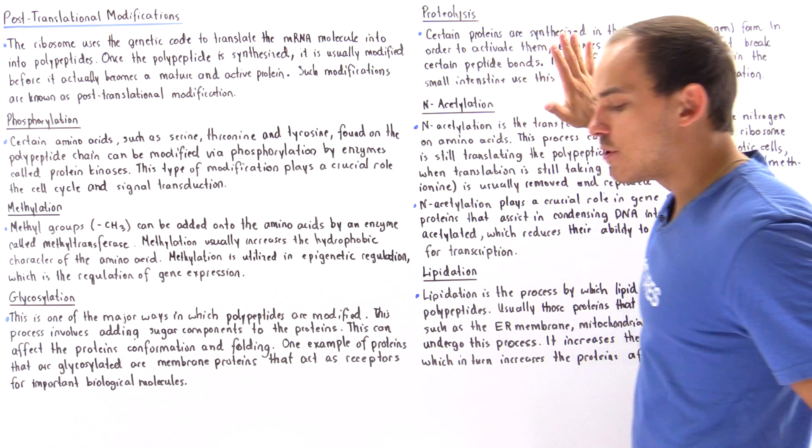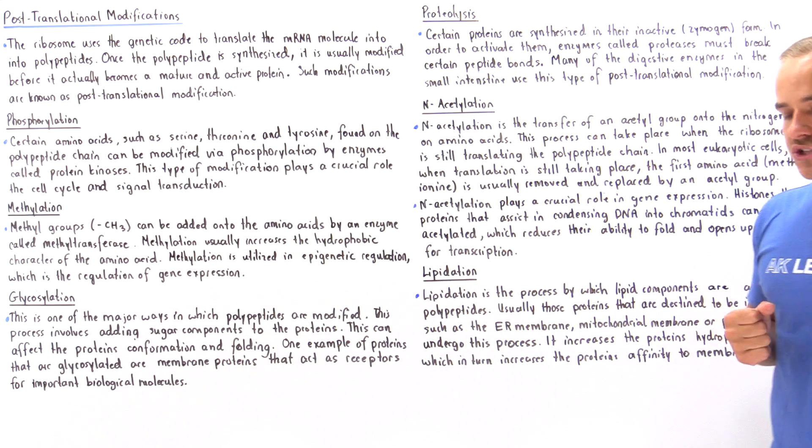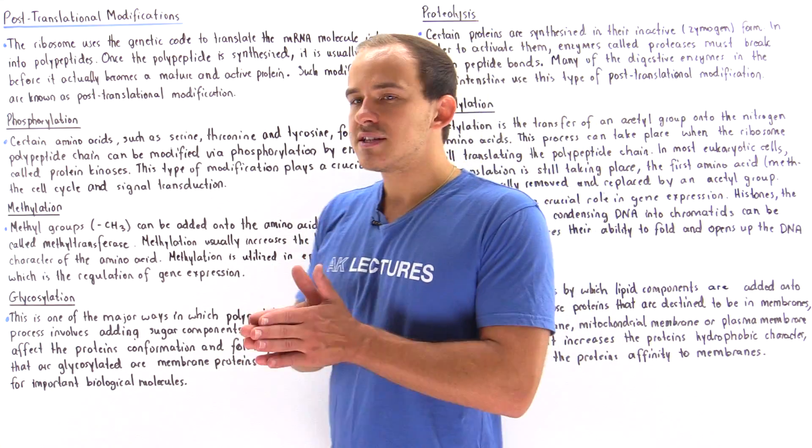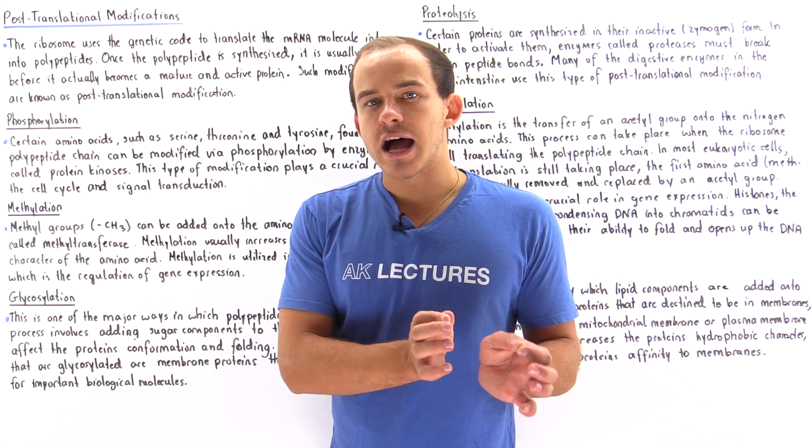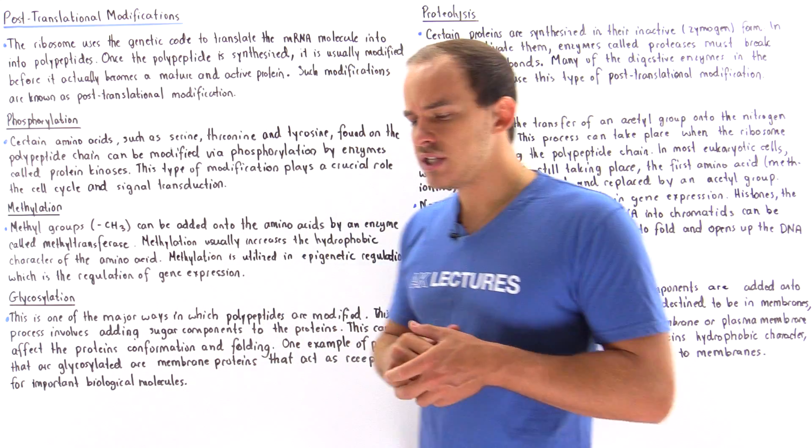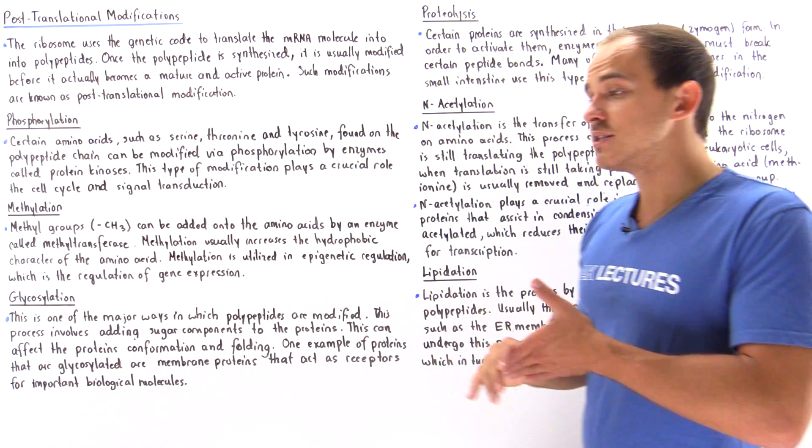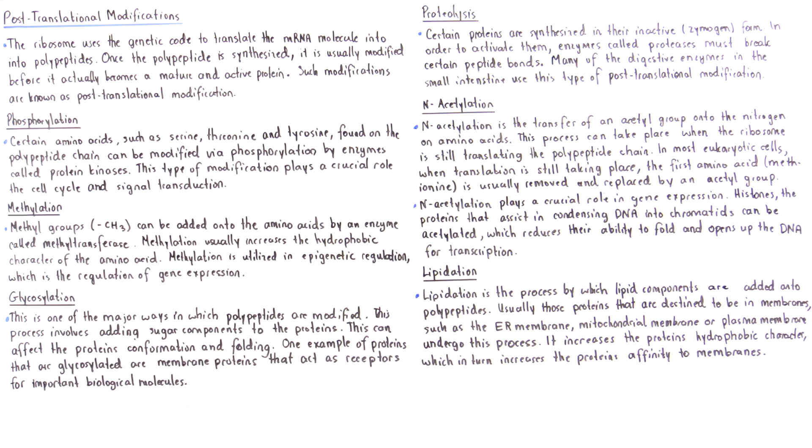Let's move on to the fourth type of post-translational modification known as proteolysis. Proteolysis is the process by which certain types of enzymes known as proteases actually cut our proteins. Why would we want to cut a protein? Basically, certain proteins are synthesized in their inactive or zymogen form. In order to activate those proteins, our enzymes called proteases must break certain peptide bonds in those proteins. Many of the digestive enzymes in the stomach as well as in the small intestine undergo this process of proteolysis.